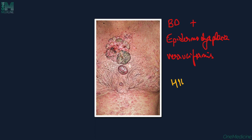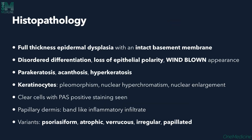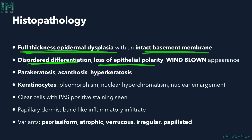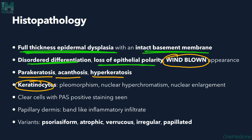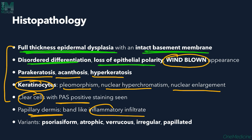In the histopathology of Bowen's disease, there is full-thickness epidermal dysplasia throughout the entire epidermis with an intact basement membrane. There is disordered differentiation of keratinocytes, loss of epithelial polarity, and a characteristic 'wind-blown appearance' where the epidermis appears distorted. Additionally, parakeratosis, acanthosis, and hyperkeratosis are present. The keratinocytes show pleomorphism, nuclear hyperchromatism, and nuclear enlargement. There are sometimes clear cells that are PAS-positive, and the dermis shows inflammatory infiltrate.